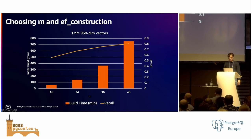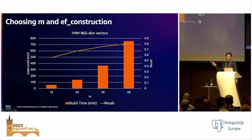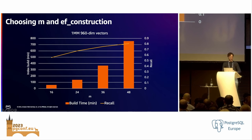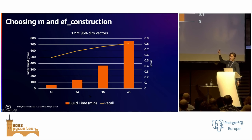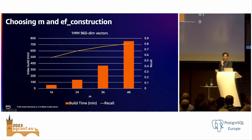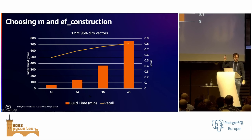The tuning parameters for HNSW are EF construction and M. The general guidance is to tune EF construction first — the default in pgvector is 64. As you push to 128 or 256, you get better recall but it linearly increases build time; eventually you get diminishing returns. M has a greater impact — on the GIST-960 dataset, which is notoriously difficult for approximate nearest neighbor algorithms, going from M=16 to M=48 improved recall from about 0.5 to 0.8 and beyond with a low EF search value. But build time increased dramatically. So if you need very high recall with a low EF search, cranking up M can help, but you pay in index build time.